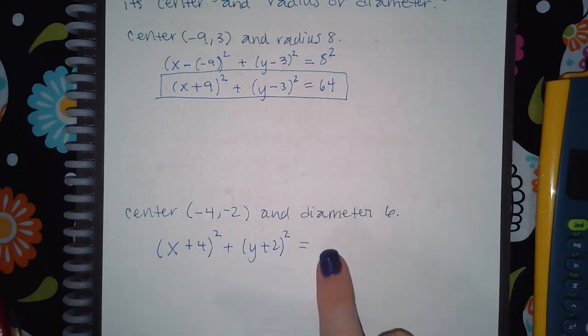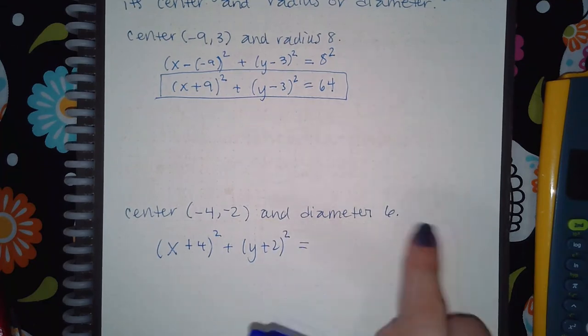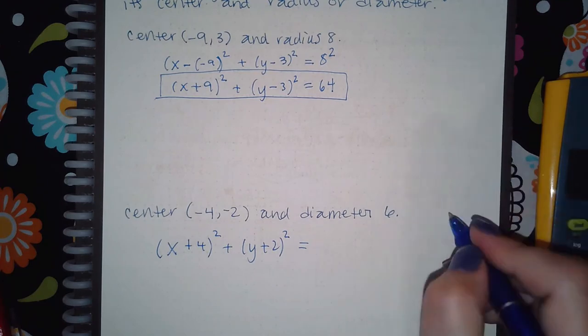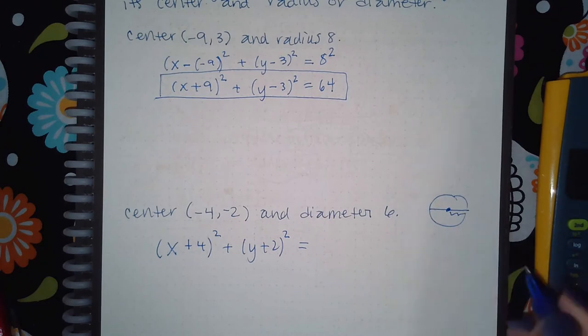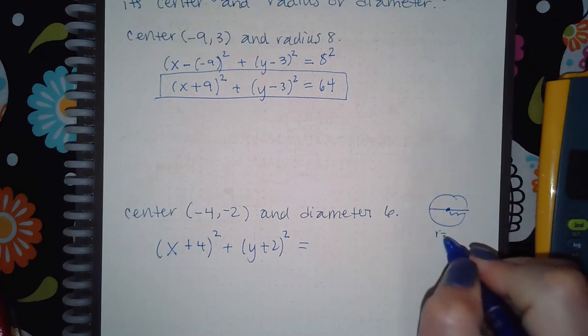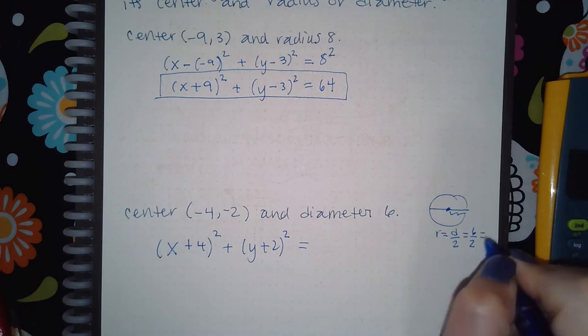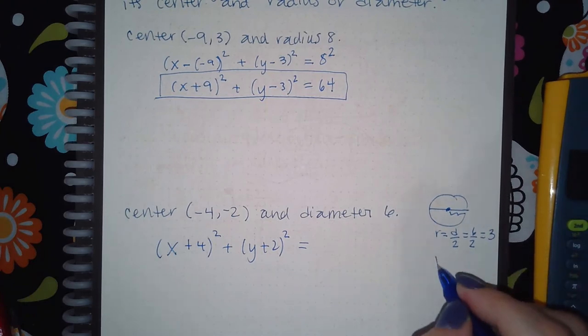But then to figure out what the radius is, we have to think about this. The diameter is 6 units. The radius is only half of that, so the radius is going to be the diameter over 2, which is 6 over 2, which is 3. And the radius squared is going to be 3 squared, which is 9.